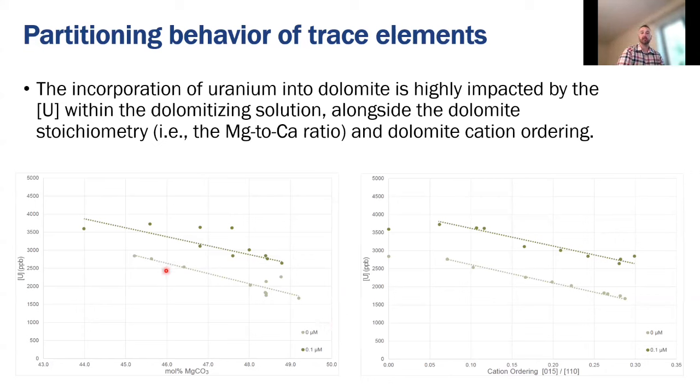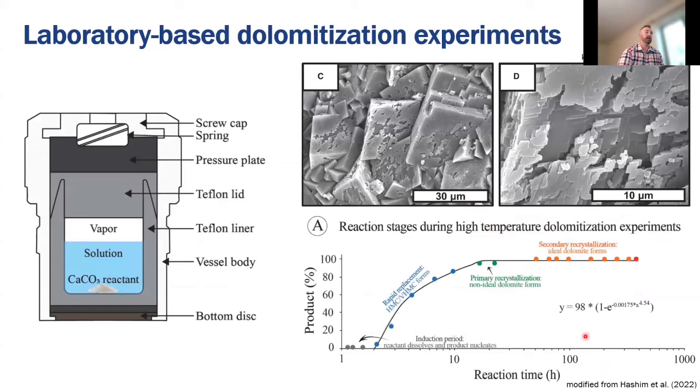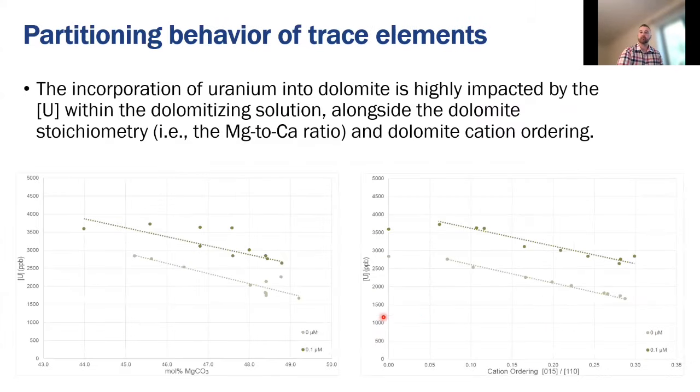In our experiments there was a first order control on the concentration of uranium in the dolomite that was simply caused by the concentration of uranium in the dolomitizing fluid. So the fluid concentration was the largest control. However, dolomite stoichiometry, so the calcium to magnesium ratio in the dolomite, also played a critical role here as well as cation ordering. So how well ordered the dolomite crystal structure was. So this may suggest that the dolomite is actually kicking out uranium upon recrystallization in the later parts of these reactions. And these changes in the dolomite stoichiometry and cation ordering also correspond to decreases in the size of the crystallographic unit cell. So the unit cell for the dolomite crystal is actually getting smaller as well too. So maybe is only able to incorporate less amounts of trace elements.